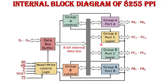The 8255 also has an 8-bit internal bidirectional data bus. All ports are connected from this data bus — data can be read from or written to it. This 8-bit internal data bus is connected with both group controls and all the ports. These ports work as input or output ports because they are bidirectional I/O ports — whether they act as input or output depends on the mode of operation of 8255.